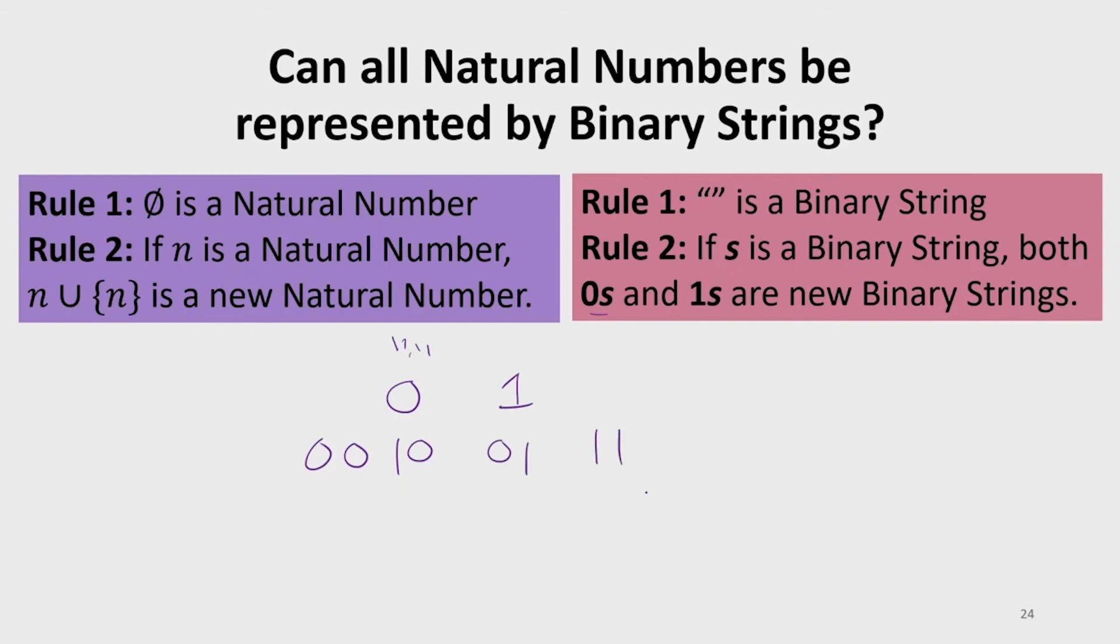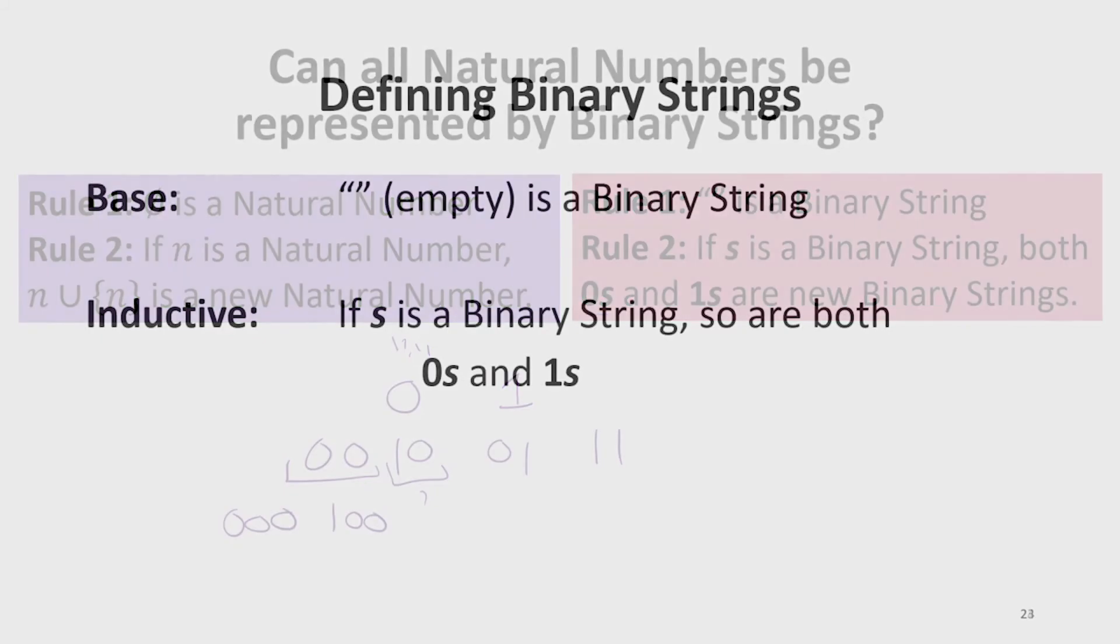We can apply the rule again. For this one, we're going to add a zero in front of it and a one in front of it. And we can do that for all these. So yeah, it will look like a binary tree. Every time you apply the rule to the previous generation, you're going to get twice as many strings. So this is going to produce all binary strings of finite length.